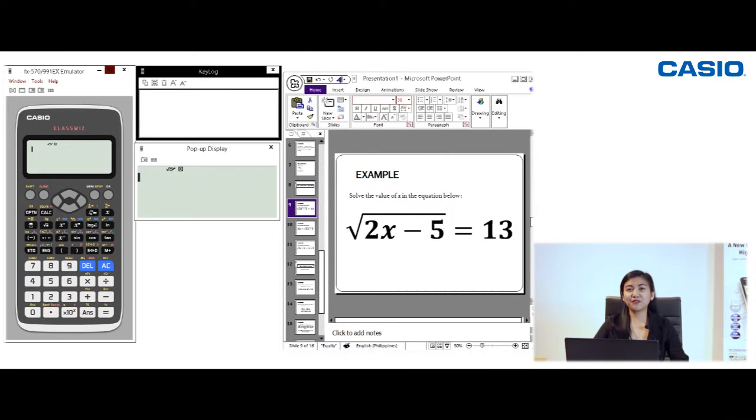So let's start. For our first example, let us solve for the value of x in the given equation: the square root of 2x minus 5 equals 13. This means we are trying to solve for the value of x, that when we multiply it by 2 and subtract 5 from the product, then the result will be 13.